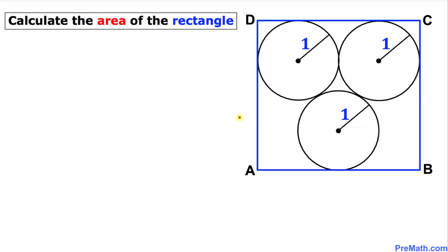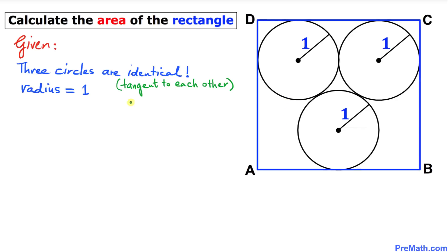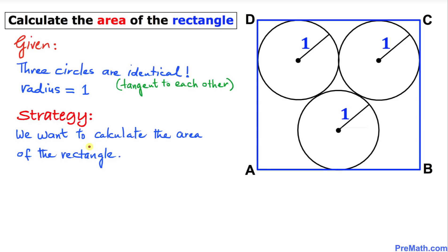Welcome to pre-math. In this video tutorial we have three identical circles with radius 1 that are inscribed in rectangle ABCD, as you can see in the figure. We are going to calculate the area of this rectangle. The information given is that these three identical circles are tangent to each other and their radius is 1.